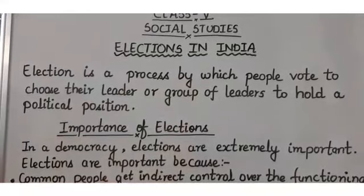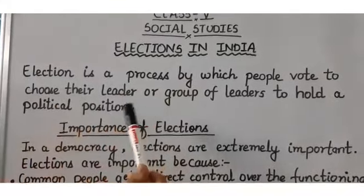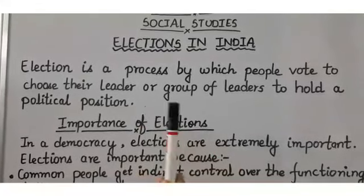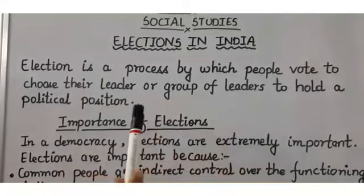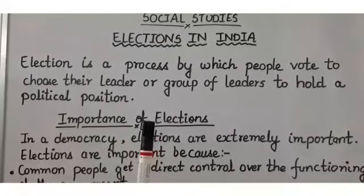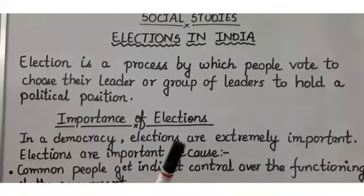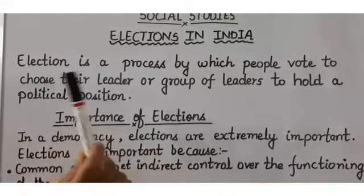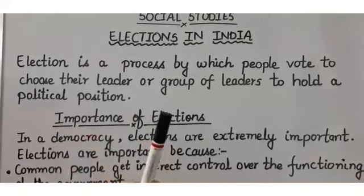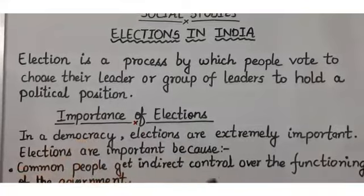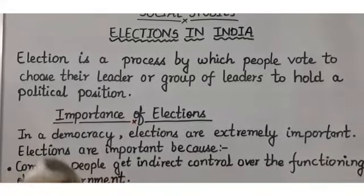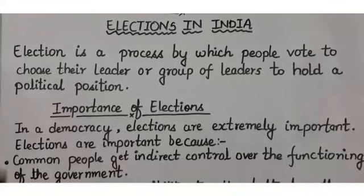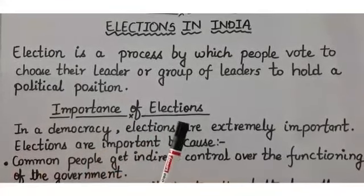What is an election? Election is a process by which people vote to choose the leader or group of leaders to hold a political position. People who are 18 or above 18 years of age, they vote and elect their representative. The Election Commission of India conducts the election.